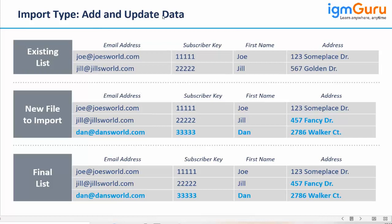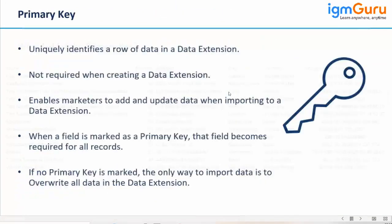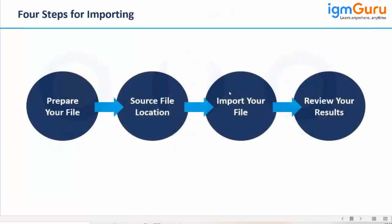If you use add and update, in this situation the address of Jill is also updated and the new customer Dan is also added. So these are the four import types. In a list we have three import types: add, update, and add and update.